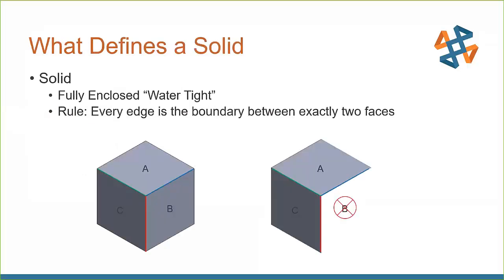What defines a solid? There are two primary traits that define a solid in SOLIDWORKS. The first and more obvious one is that the geometry has to be fully enclosed — it needs to be completely watertight. The other, less intuitive rule is that every single edge inside a solid must be the boundary between exactly two faces. You'll see in the bottom left, we have a cube with faces A, B, C, and edges red, green, and blue. If we look at the blue edge, it is the boundary for only faces A and B — no more and no less.